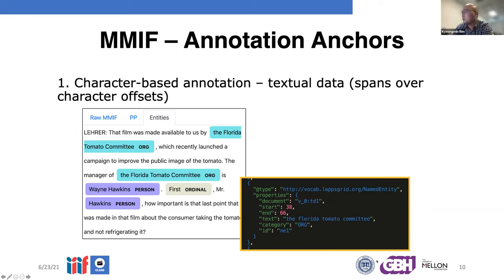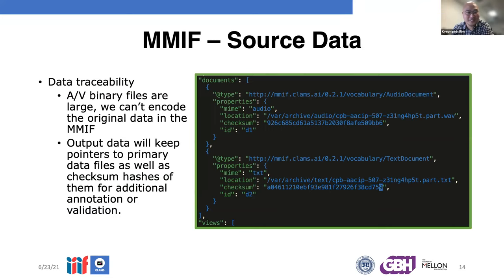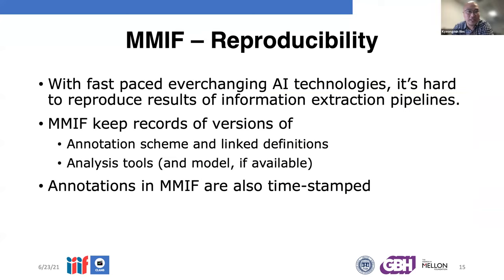This also applies to image annotations and audio or video time-based annotations. In general AI and ML practice, one tool does one thing, but we want MMIF to have bridging annotations so that we can look at multi-dimensional data sources altogether to provide comprehensive information. This allows archives to provide more interactive presentations and enables researchers to use the data to train additional AI tools using multi-sensory learning. We also encode source data in MMIF as a file pointer, and for reproducibility we keep all timestamps and version numbers within the MMIF format so everyone can run the same workflow and get the same result.